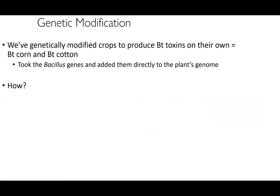Because of the efficacy of Bt as a biopesticide, we've genetically engineered crops to produce Bt toxins on their own — you've probably heard of this as Bt corn or Bt cotton. These plants arose because we took the Bacillus genes and added them directly to the plant's genome. Genetically modified crops are super important — they allow for cheap production of food and are completely and 100% safe. Please do not believe any misinformation out there about these crops. They're going to be incredibly important going forward, especially as this planet gets hotter and drier.